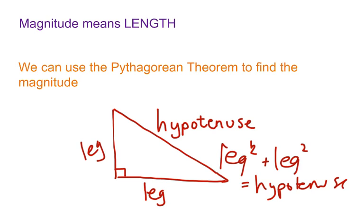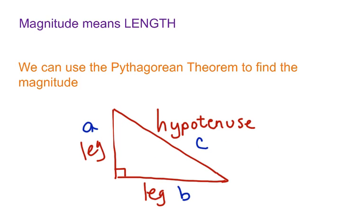You need to make sure that you understand that the legs are the two sides that make the 90-degree angle, and the hypotenuse is the side that is opposite. We would often see that called a squared plus b squared equals c squared, where c is the hypotenuse of a right triangle.